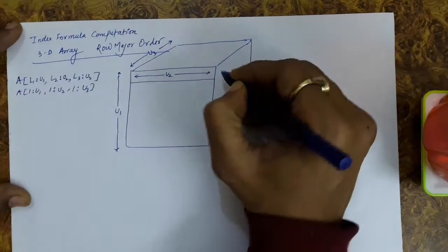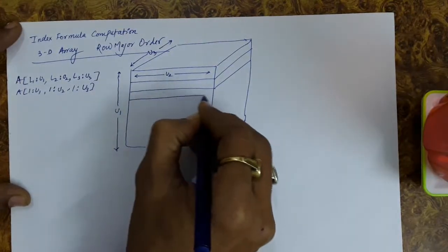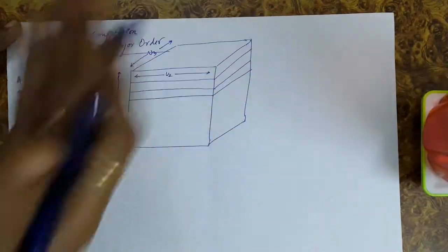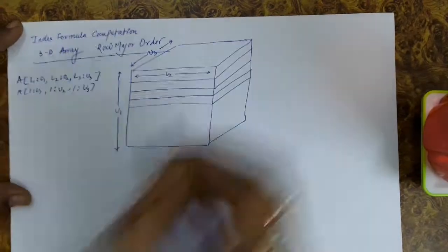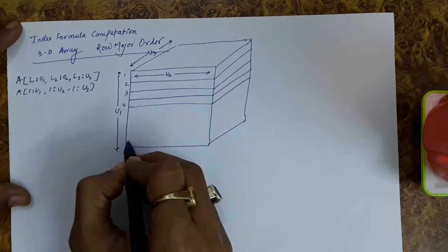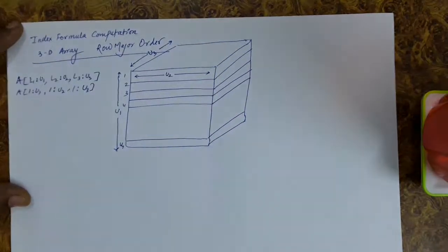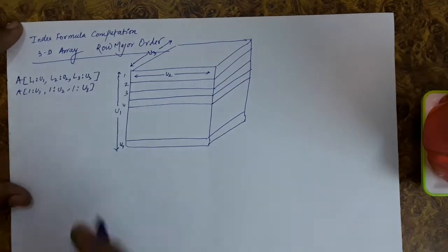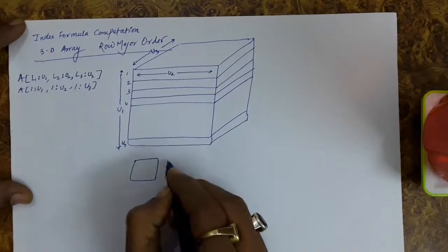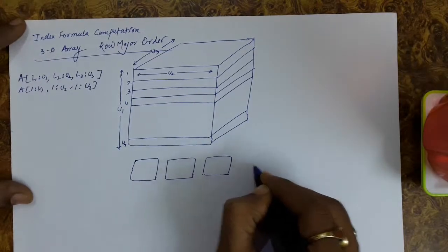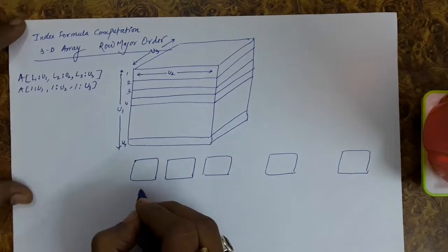If we take this 3D array and break it into various pieces or slices — cut from here you have a slice, cut from here you also have a slice, and so on — the total number of slices you can cut are 1, 2, 3, 4 and so on up to u1. The total number of slices will be u1, because the first dimension is u1. So this is the first slice, second slice, third slice, and so on up to u1 slices total.